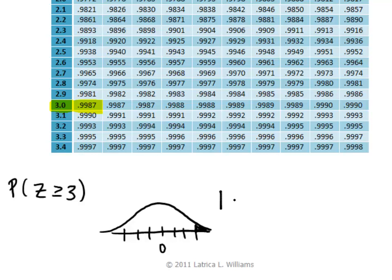And so, if I take 1 minus .9987, I obtain a probability of .0013. And thus, the probability that a student scored greater than or equal to 99.06 is .0013.